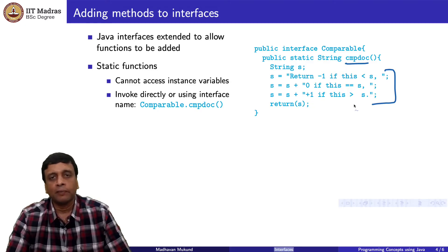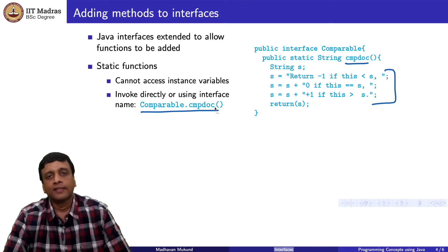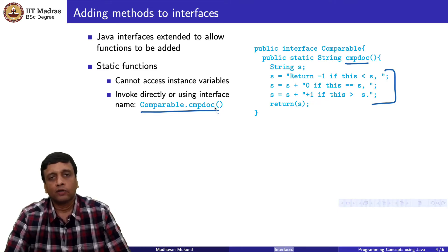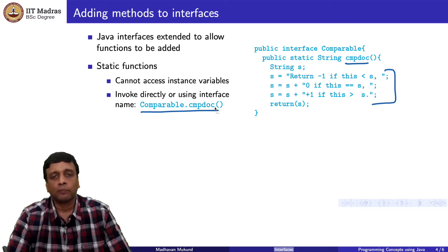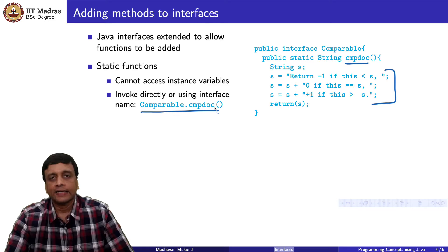If you are implementing the interface, you can call that static function directly. If it is in some other interface, you use the interface name — similar to how 'System.out.println' works, where System is a class containing a stream called 'out' with a function 'println'. You call it through the interface name, and it is a property of the interface because there are no objects. This is one thing you can now do with Java interfaces: add static functions.